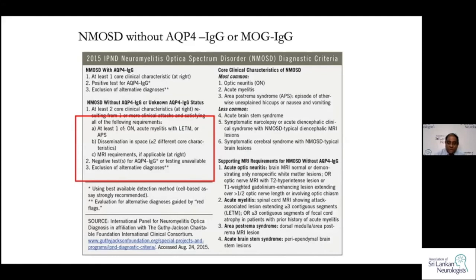The third subgroup is NMOSD without either of these antibodies. A diagnosis can still be made in this group. We are not entirely sure what is happening in this group, but they have a similar clinical picture and investigation findings — everything fits except that they don't have either antibody.